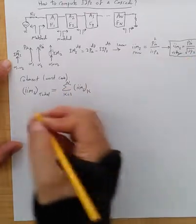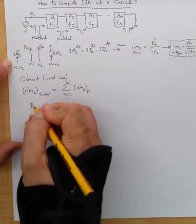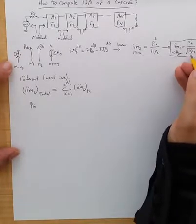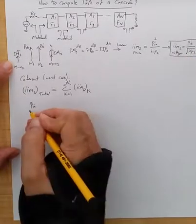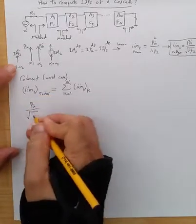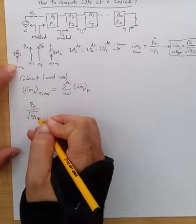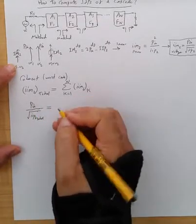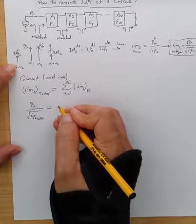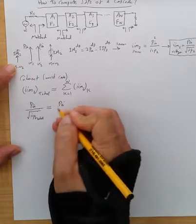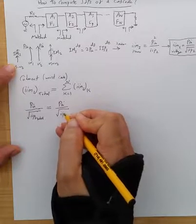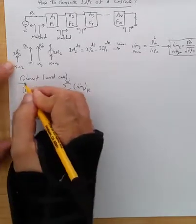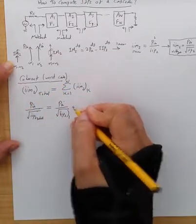Now, from this, we know that if we want to associate a total effective equivalent intercept point of second order for the whole cascade, we can replace this guy with that. And then we can replace this with Pn for the first stage, Pn divided by IIP2 of first stage. Again, we are coherently adding everything as a worst case scenario.